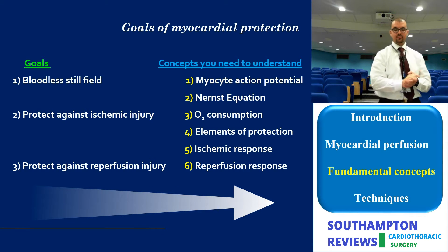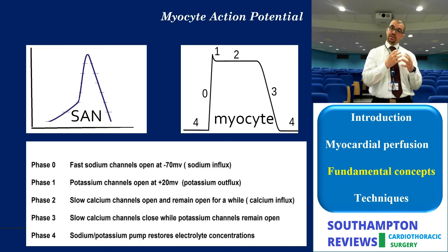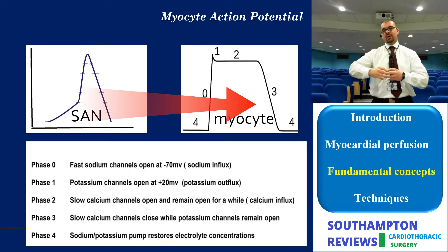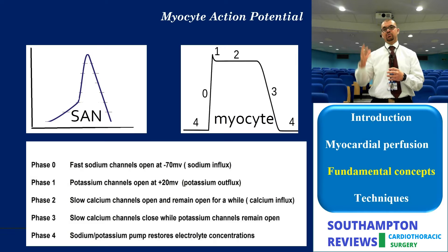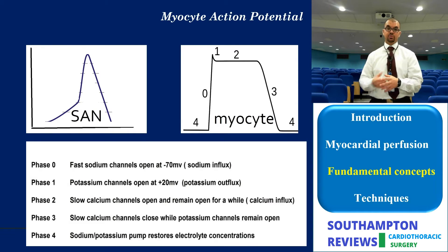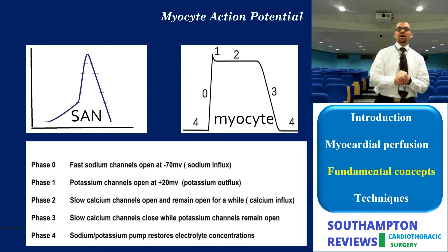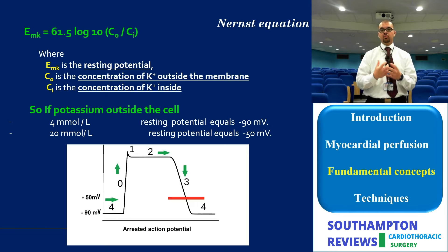I will not go into details about the action potential — just a brief reminder. The sinoatrial node has innate electrical activity which triggers spontaneously at all times. This triggers the myocyte action potential, which goes through a cascade of four stages, and subsequently activates neighboring myocytes, creating an electrical wave that flows through the heart. This electrical wave is then translated into mechanical contraction — that is, electromechanical activity — which is the basic function of the heart.